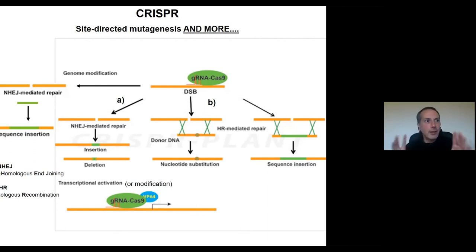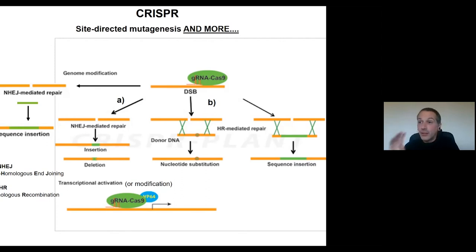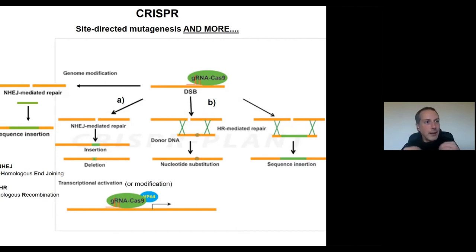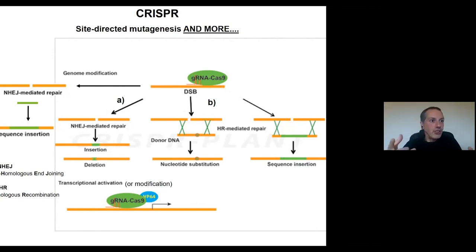The fantastic thing of CRISPR is that we have the ability to say where, in the 3,000 million base pairs of our genome, we want to mutate. And now we have all this information available — for example, the human genome is sequenced and we know where the genes are. To understand the function of the genes or to modify them, we need to target the mutagenesis to specific regions of the genome.